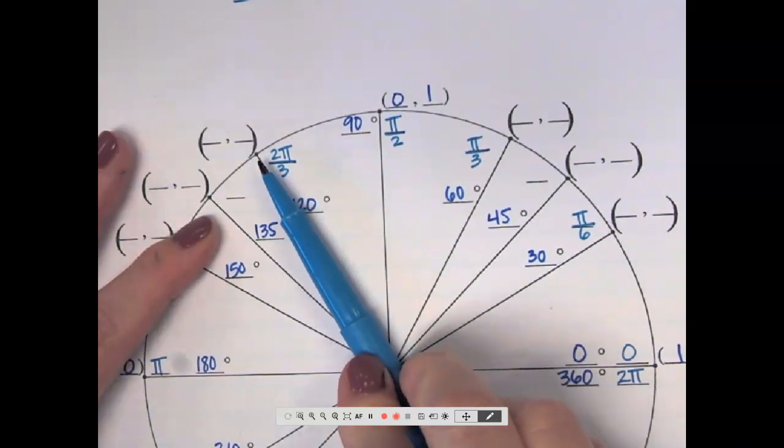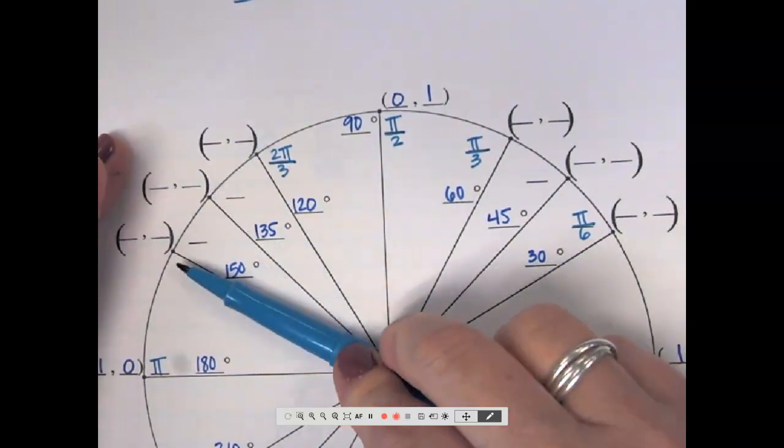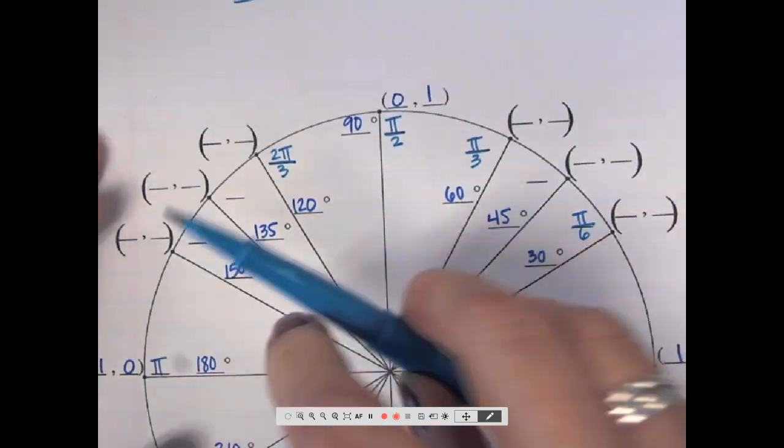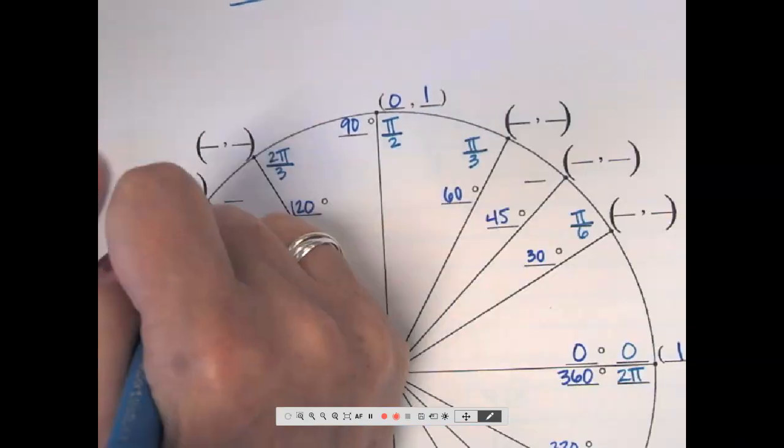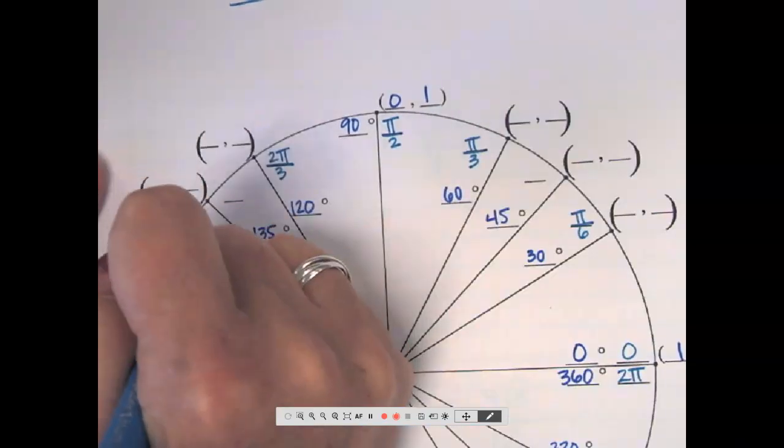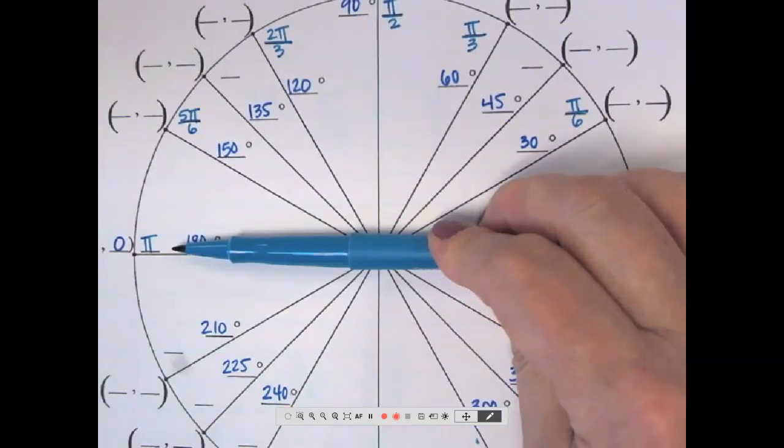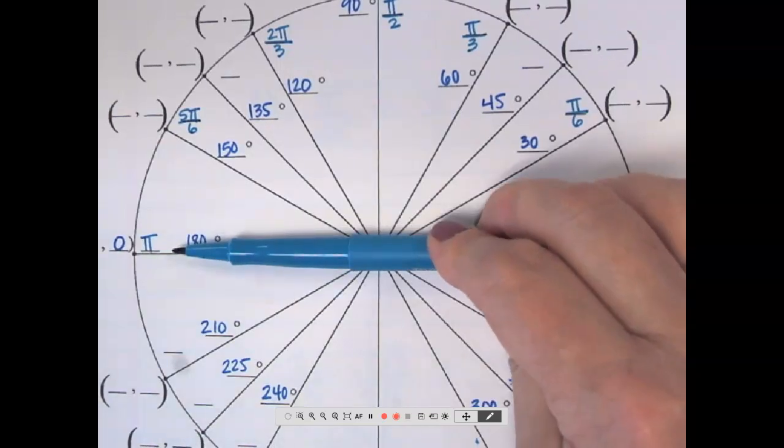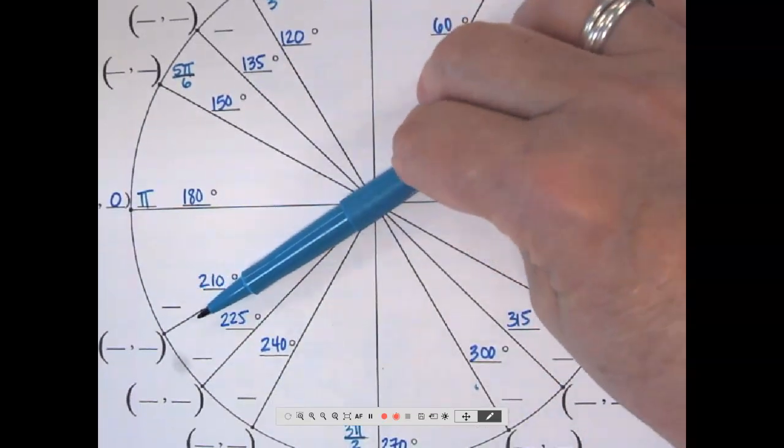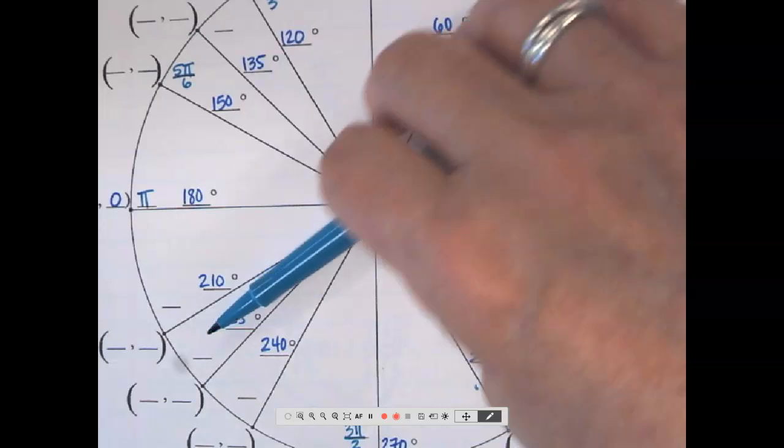Skip over the 45. This was 4 sixths. This is 5 sixths. Doesn't reduce. This is 6 sixths. It reduces to pi, but we already had it there. So that's 6 sixths. This is 7 sixths. Doesn't reduce.